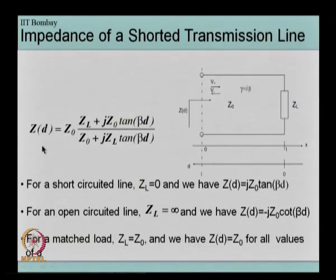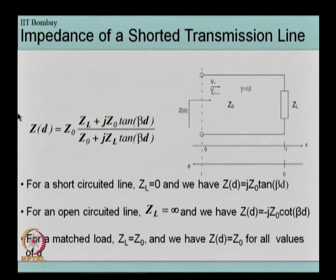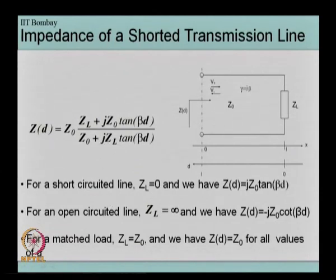The input impedance Z(d) for a transmission line with a load connected at one end is given by this equation. Based on this equation we can derive some interesting cases. If Z_L is 0 then we have the input impedance given by this equation. If Z_L is infinity, that is if this end is open circuited, then Z(d) is given by this equation. And if Z_L is equal to Z0 then Z(d) equals Z0.